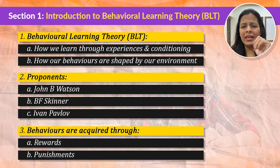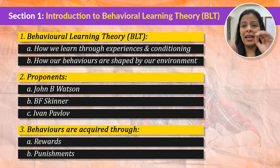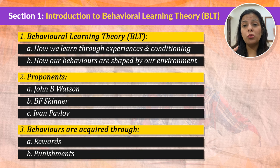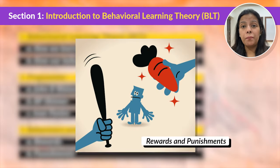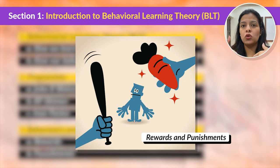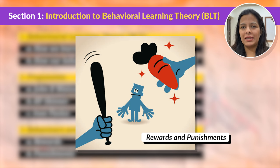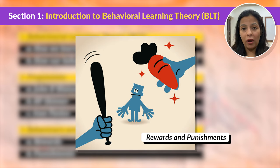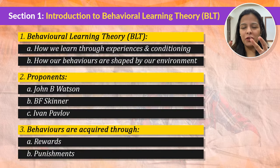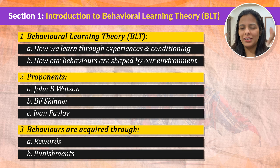What's really interesting about this theory is that it explains how behavior is acquired through reward and punishment. Basically, when you are rewarded for doing something, you're more likely to repeat that behavior, and when you are punished, you will tend to avoid it. We are going to dive deeper into it, so if you could not understand it clearly, don't worry — there's more to it.